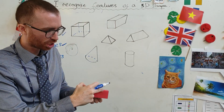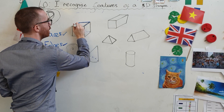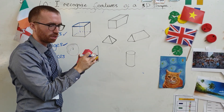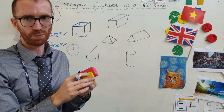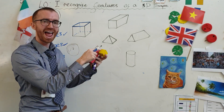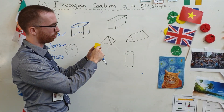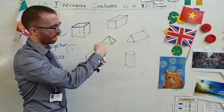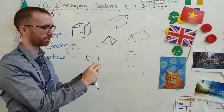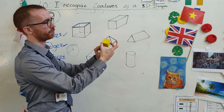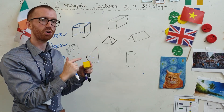Edges — I bet this one's quite easy. The edges are these straight lines on the 3D shape. This here is an edge, along here — an edge, an edge, an edge. All the bits that you think might cut your finger when you touch them — these are all edges. A little bit like on a 2D shape we called them sides, but on a 3D shape we call them edges. How many edges does this cube have? 1, 2, 3, 4 here, and 5, 6, 7, 8, and at the back 9, 10, 11, 12. The cube has 12 edges.